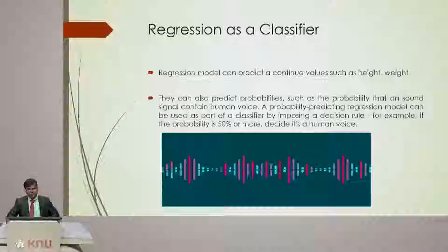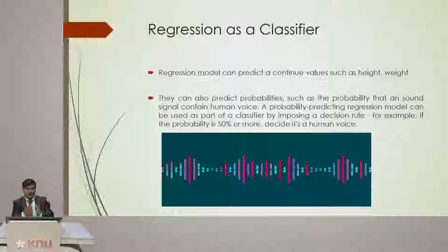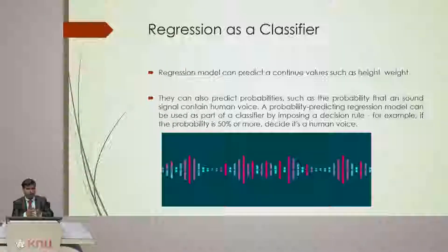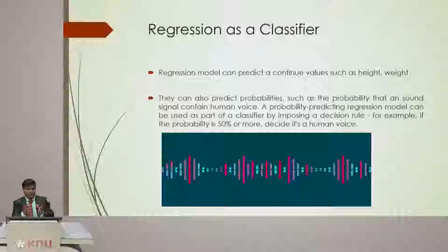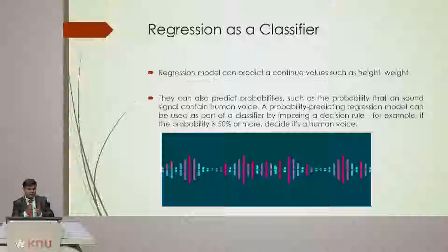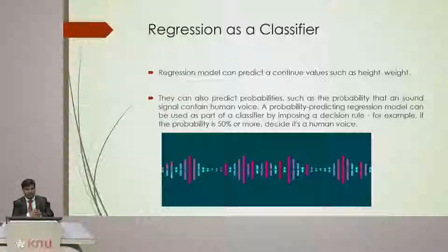From regression, we know that we can predict a continuous value, such as a change in height, weight, housing price, or salary based on experience. On the other hand, we can also predict, for example, if a sound signal contains a human voice or not — as we have seen with logistic regression. We can set a threshold and classify using decision rules. Though regression can slightly be used as a classifier, we have specific, more efficient models for classifiers.